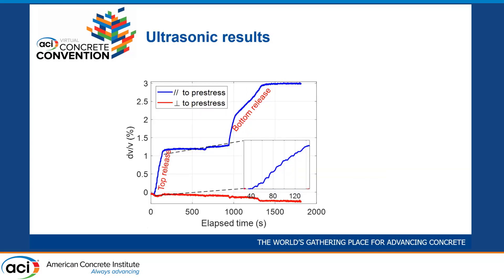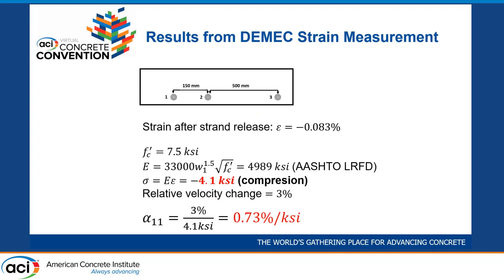This figure shows the ultrasonic results. When the strands were released, the wave velocity increased in the stress direction and the velocity dropped in the unstressed direction. Zooming into the top release part, we can see more details — each step corresponds to one cut of a strand. From the DMATC measurement, the strain was about negative 0.083%, and we can estimate the compression stress change at the test area is about 4.1 ksi. The acoustoelastic coefficient is then calculated to be about 0.73% per ksi.